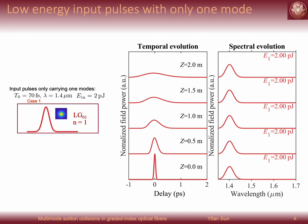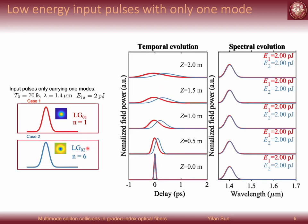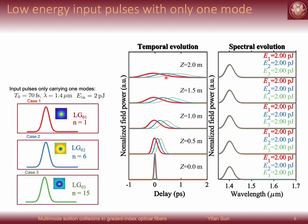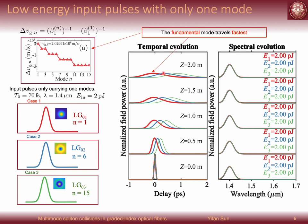For simplicity, we start by considering input pulses that are just carrying one single mode. In the first case, we inject a pulse with the same parameters as before and only carrying the fundamental mode LG01 with the low energy 2 pJ. So we see in temporal domain this pulse just broadens and nothing changes in spectrum. Next, if the input pulse carrying the LG02 mode, we notice the pulse propagates slower than the former case as it has a larger group delay. So if the input pulse carrying the higher order mode LG03, we see this group delay is larger. From this, we understand the fundamental mode travels fastest.